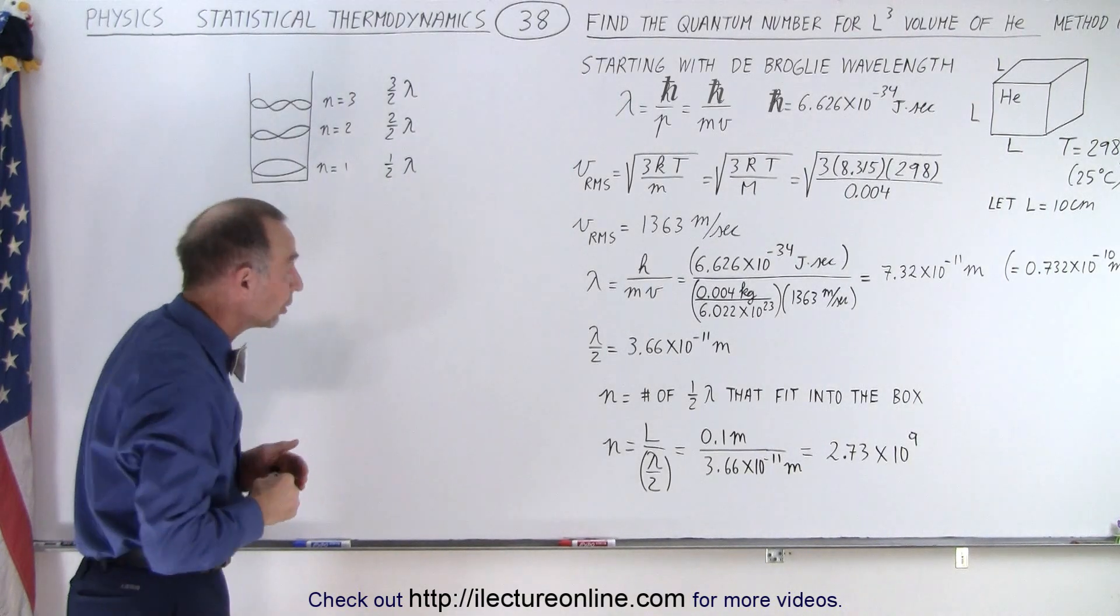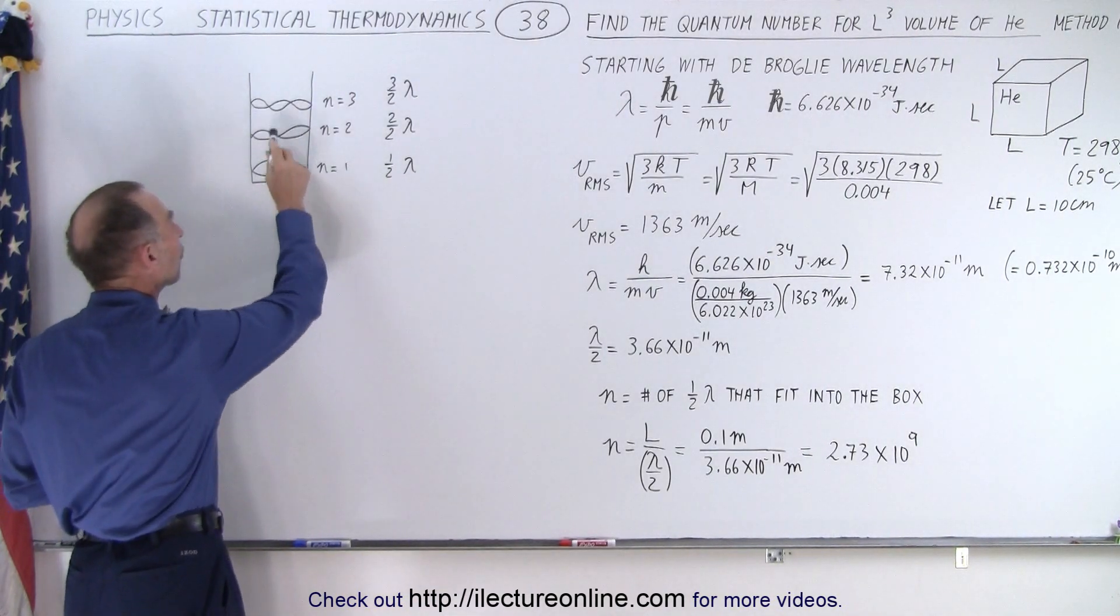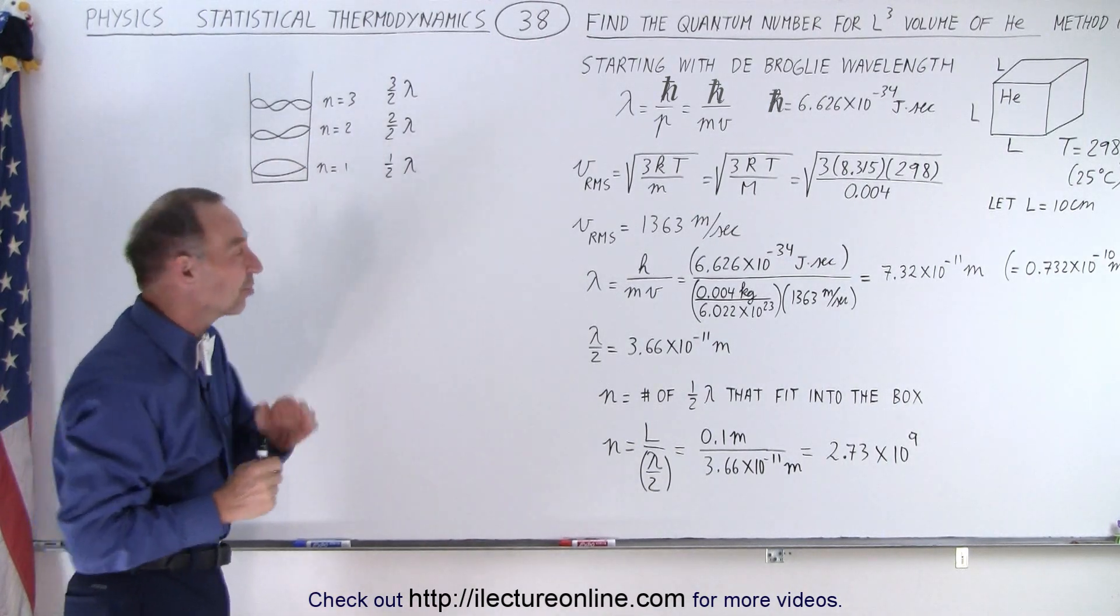As it goes back and forward, what is the number of wavelengths we have when it goes from one side to the other side?